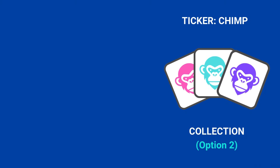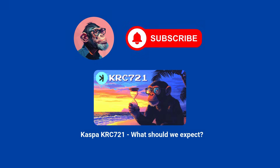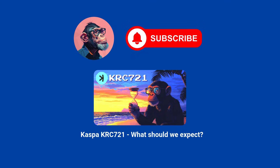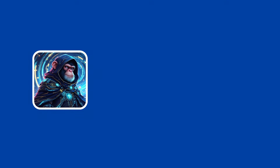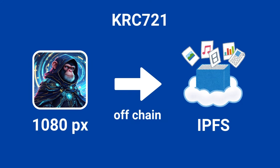Thankfully, tools like artificial intelligence and programmable IPFS storage can simplify the process. As mentioned in a previous KRC 721 video, high resolution images can be challenging to store directly on chain. With KRC 721, however, all media files are stored on IPFS, freeing the chain from unnecessary and inefficient data loads.